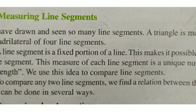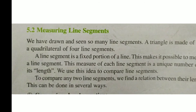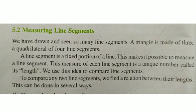We have drawn and seen so many line segments. A triangle is made of 3 line segments; a quadrilateral of 4 line segments. So a line segment is a fixed portion of a line, and we measure it with a unique number that is known as the length. We use this idea to compare line segments, and to compare any two line segments we find the difference between their lengths.